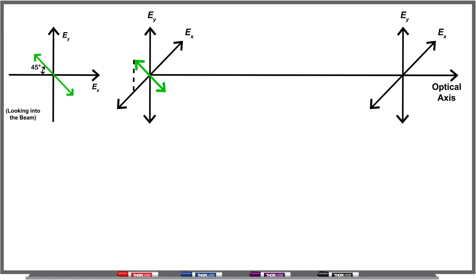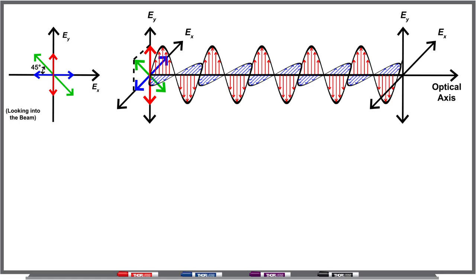The component that is parallel to the horizontal x-axis, represented by the blue arrow, and the component that is parallel to the vertical y-axis, represented by the red arrow. Both of these components have the same amplitude.